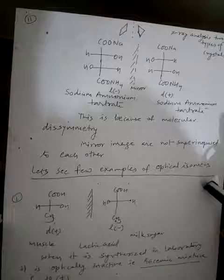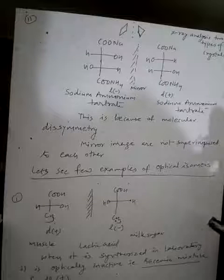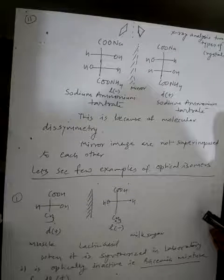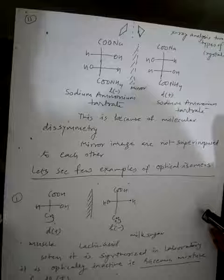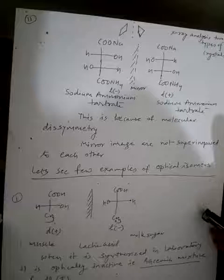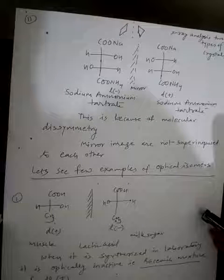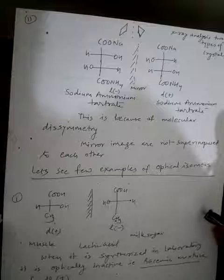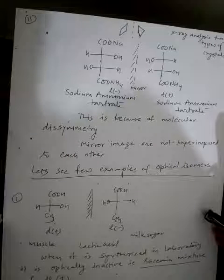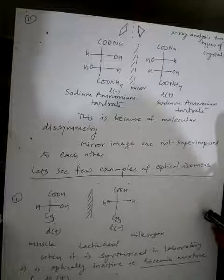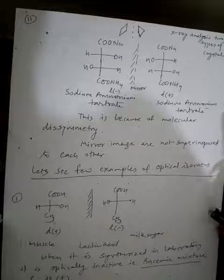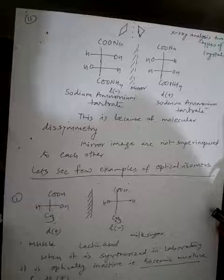Let's see a few examples of optical isomers in nature. Lactic acid — lactic acid in muscles is dextrorotatory, whereas lactic acid from milk sugar is levorotatory. When synthesized in the laboratory, it is optically inactive — that is, a racemic mixture of lactic acid, DL.